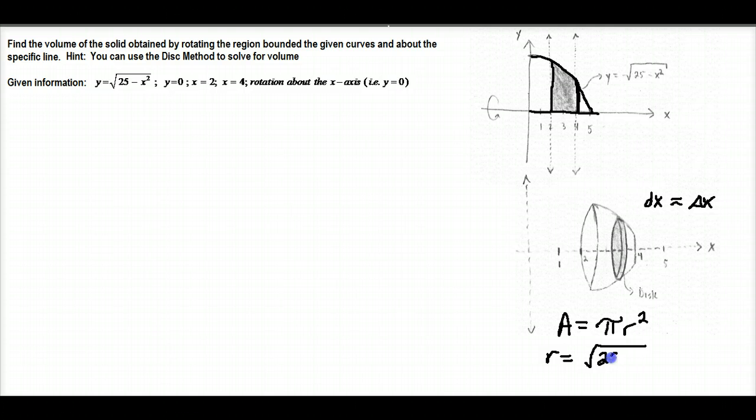And so for that reason, what we say is that the radius of this particular formula here for area is actually going to mimic the same thing as our function that we were given here, which is square root of 25 minus x squared. So as that is changing from x equals 2 to x equals 4, the radius changes.